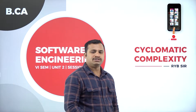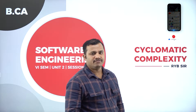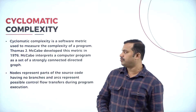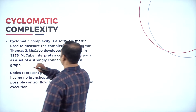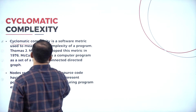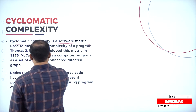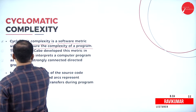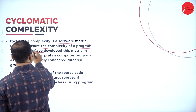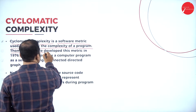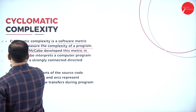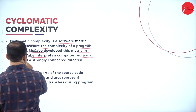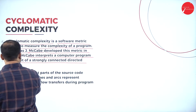Now you will see about cyclomatic complexity, which is available in your syllabus of software engineering. Cyclomatic complexity is a software metric used to measure the complexity of a program, which was defined by Thomas J. McCabe, who developed this metric in 1976. McCabe also interprets a computer program as a set of strongly connected directed graphs.